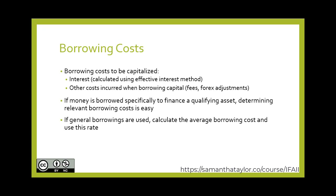If the money is borrowed specifically to finance a qualifying asset, then determining the relevant borrowing costs is relatively easy. If general borrowings are used — funds used by the company to finance a bunch of different items — then you must do a separate calculation to calculate the average borrowing costs and use this rate specific to that asset.